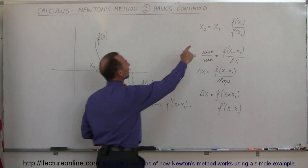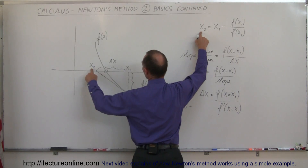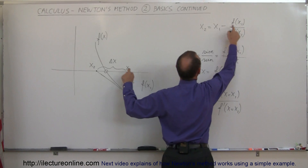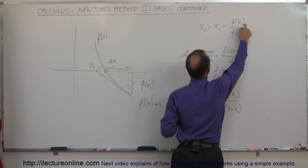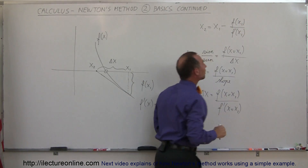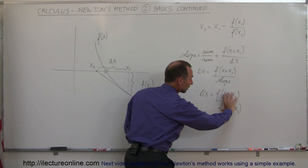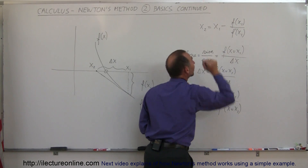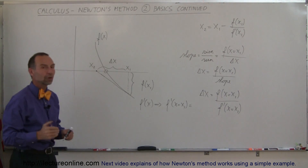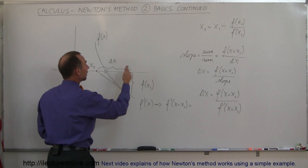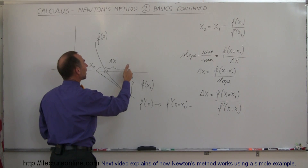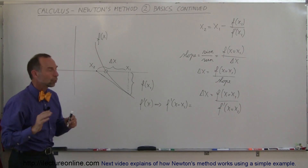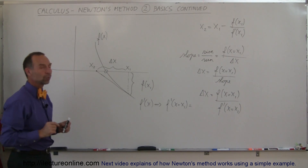Now looking at this equation, x₂ is therefore equal to x₁ minus f(x₁) divided by f'(x₁), which equals x₁ minus delta x, bringing you to the next point. So you can see that it doesn't matter whether evaluating your function gives you a point above or below the x-axis — the method works just as well, and Newton's method works just as well.